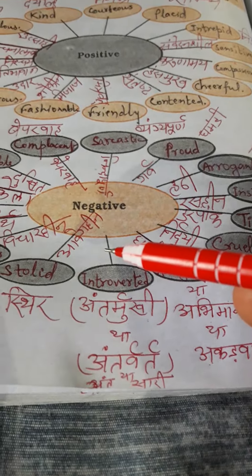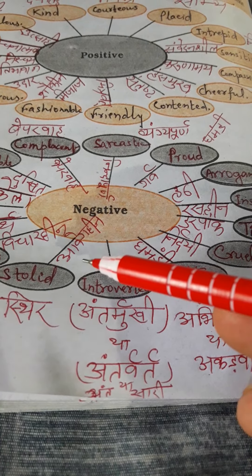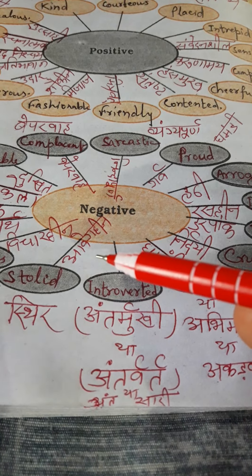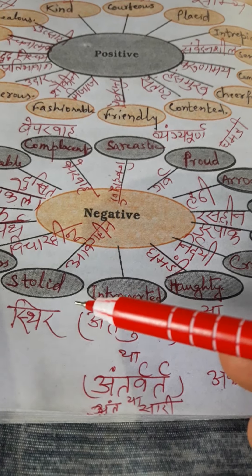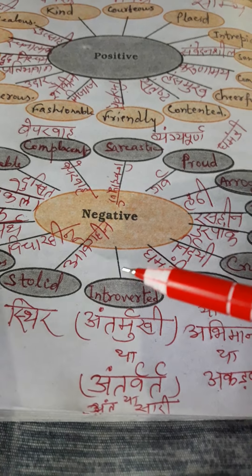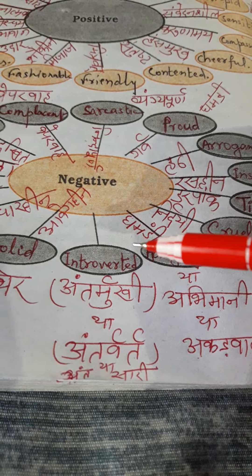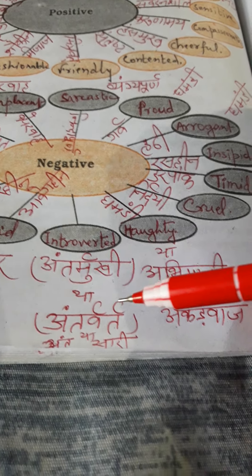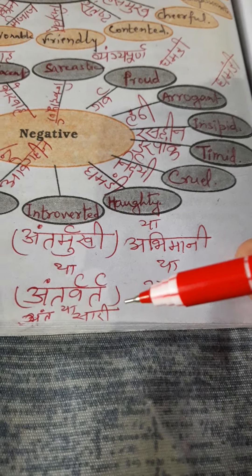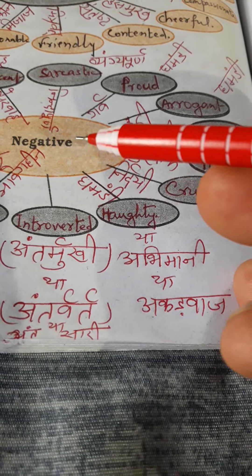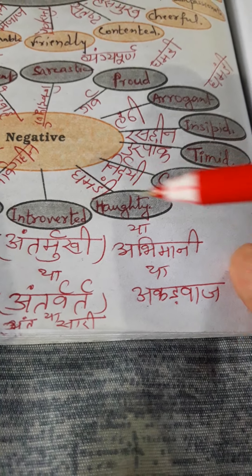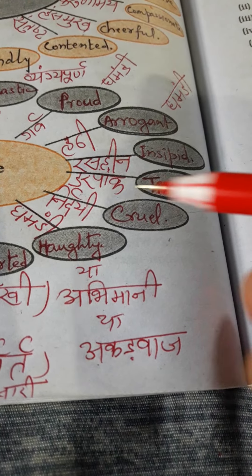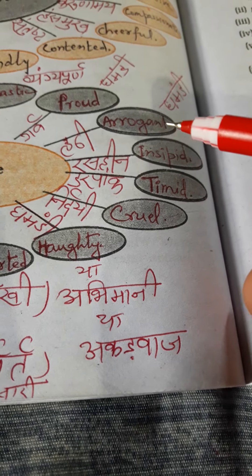Stolid means 'aveghin' or 'sthir' in Hindi — it becomes negative when there is a need to be in good velocity or acceleration but you are in a quite static mode. Introverted means 'antarmukhi' or 'antarvart' or 'antshari'. Haughty means 'ghamandi' or 'abhimani' or 'akarwaj'. Cruel means 'nirdai'.